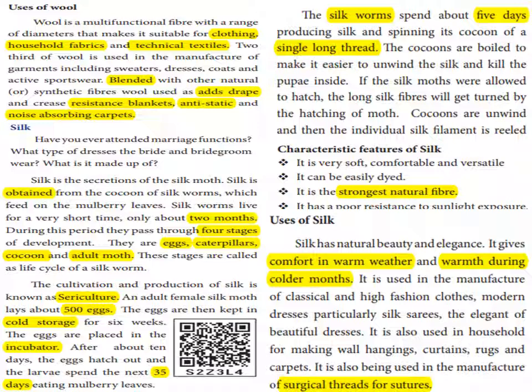The silkworm spends about 5 days producing silk and spinning its cocoon from a single long thread. The cocoons are boiled to make it easier to unwind the silk and kill the pupae inside. If the silk moths were allowed to hatch, the long silk thread would be broken. The cocoons are then unwound and the individual silk filament is reeled.